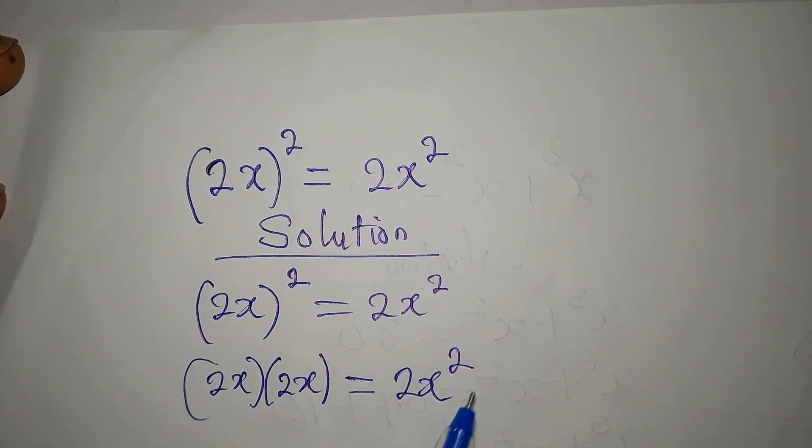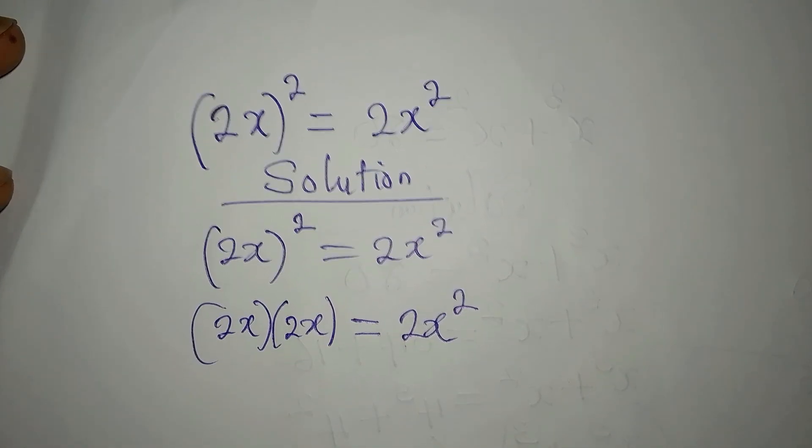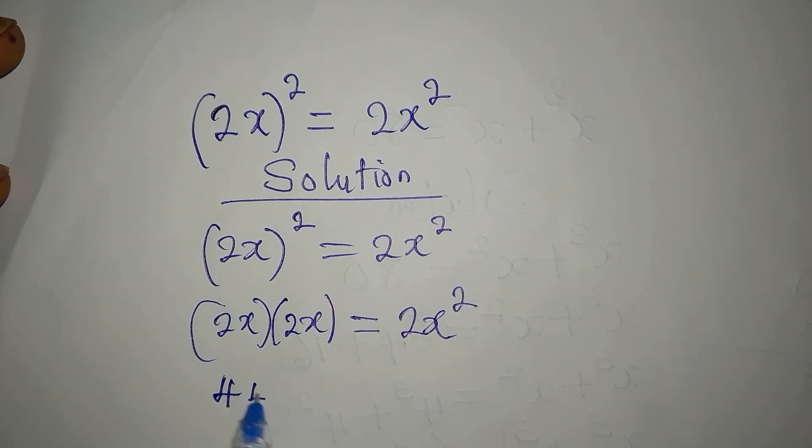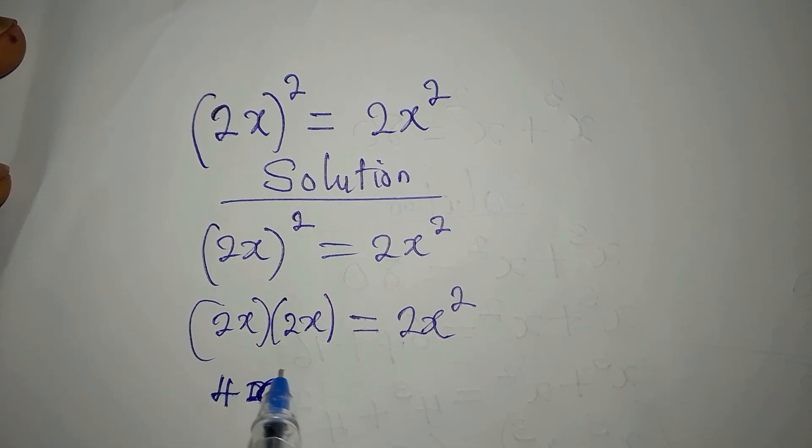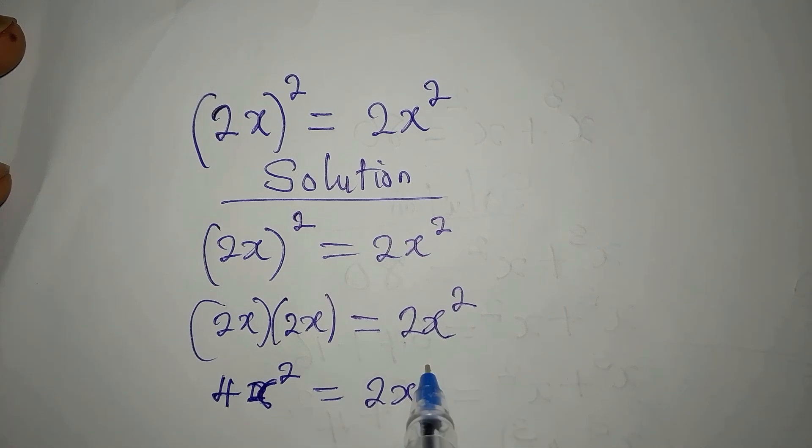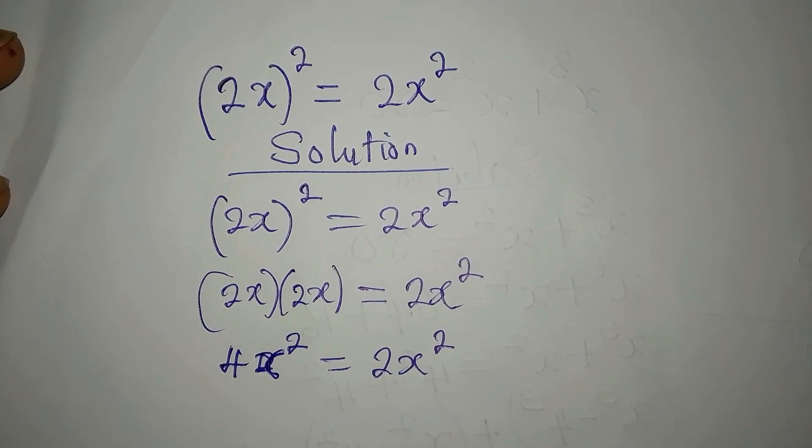These two has no business with this square. Now 2x times 2x, that will give us 4x². And this is equal to 2x². To proceed, why don't we divide by 2? Since 2 is here already, this will go.